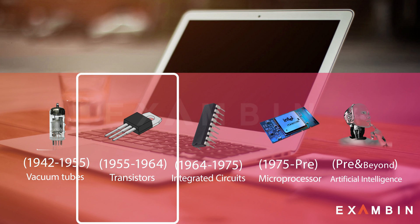The second generation of computers used transistors. The size of the computers was decreased by replacing vacuum tubes with transistors. Examples of second generation computers are IBM 7094 series and IBM 1400 series.